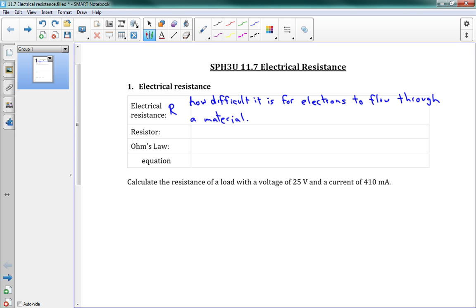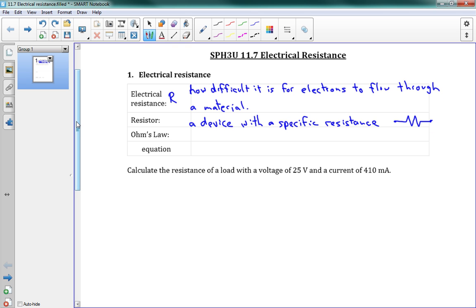We have things called resistors, which we use in our circuits. This is a device with a specific resistance. On our circuit, it looks something like this - a squiggly line. The number of squiggles, usually the more squiggles, the larger the resistor, but we're not too picky about that. You just do a couple up and down. That is a resistor.